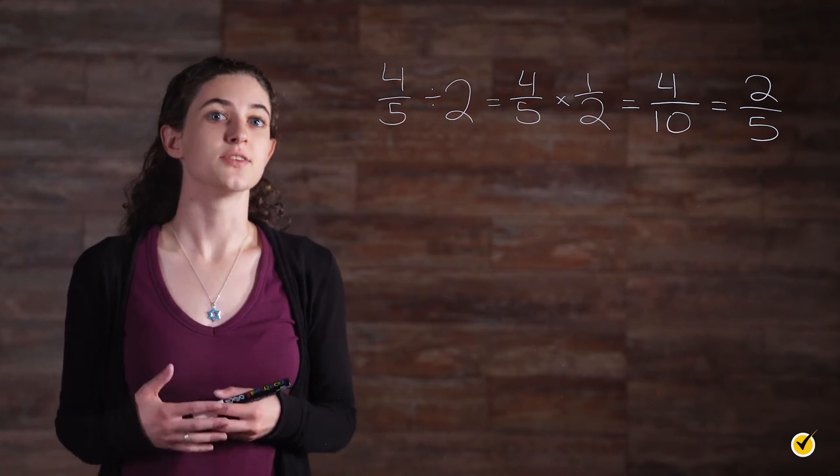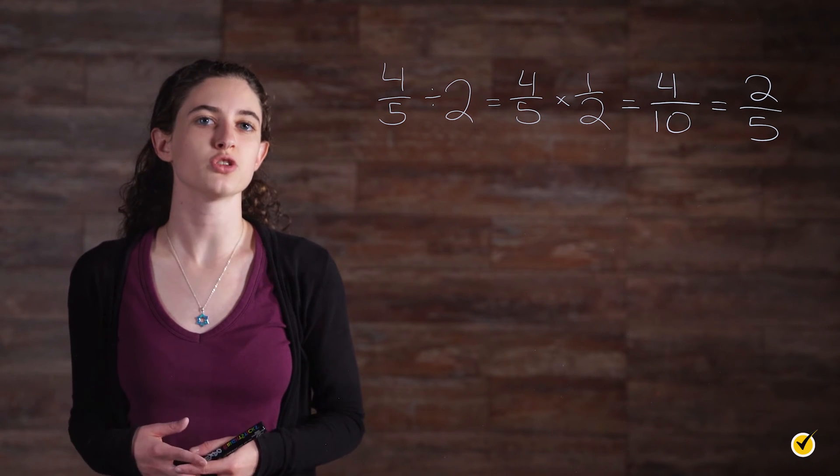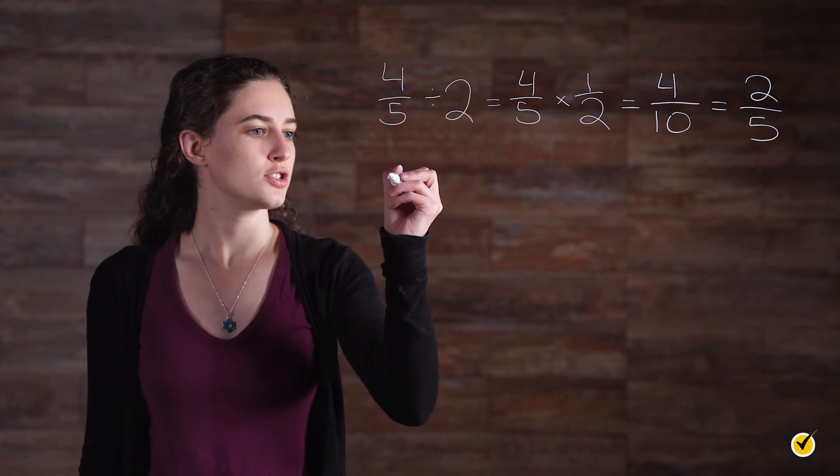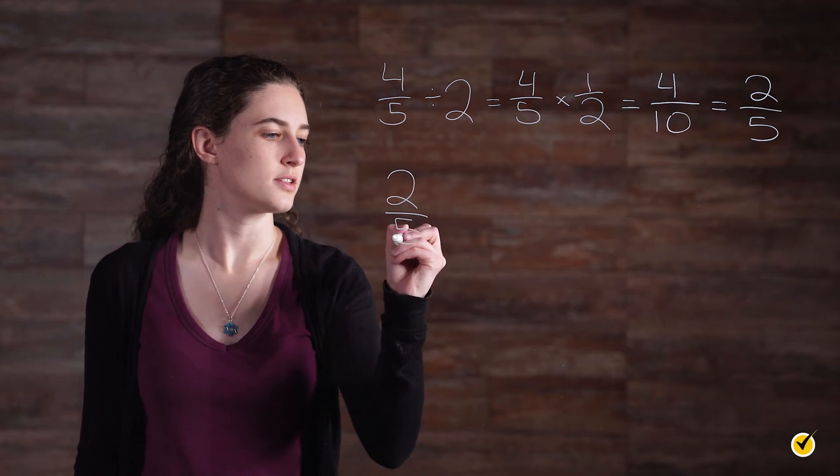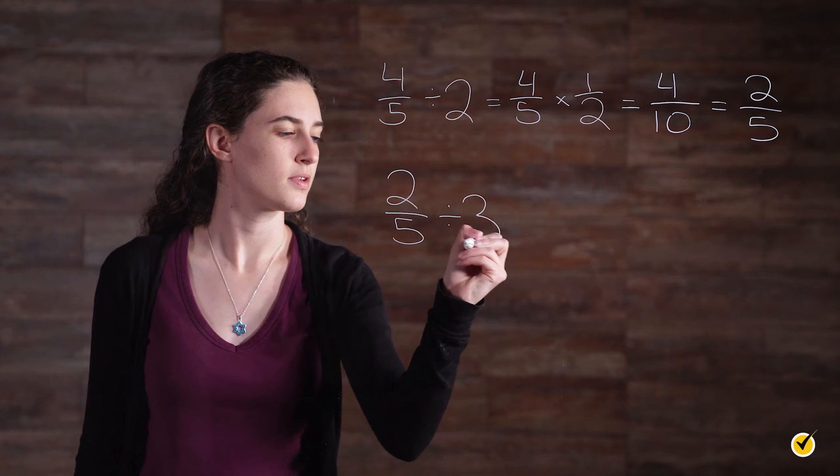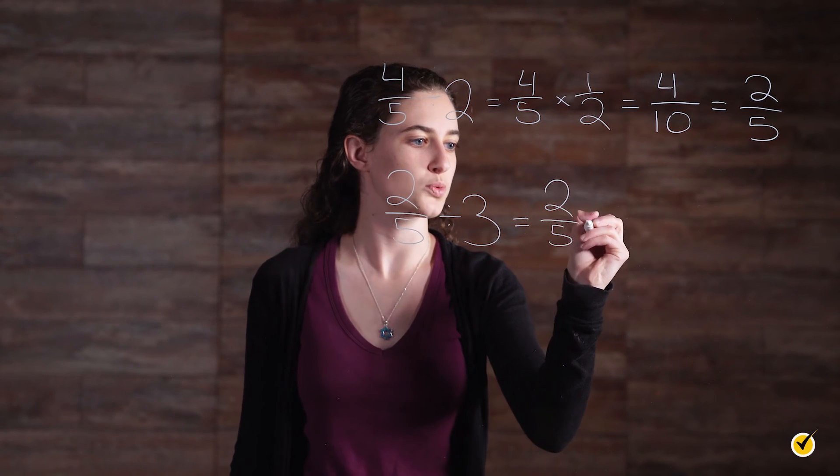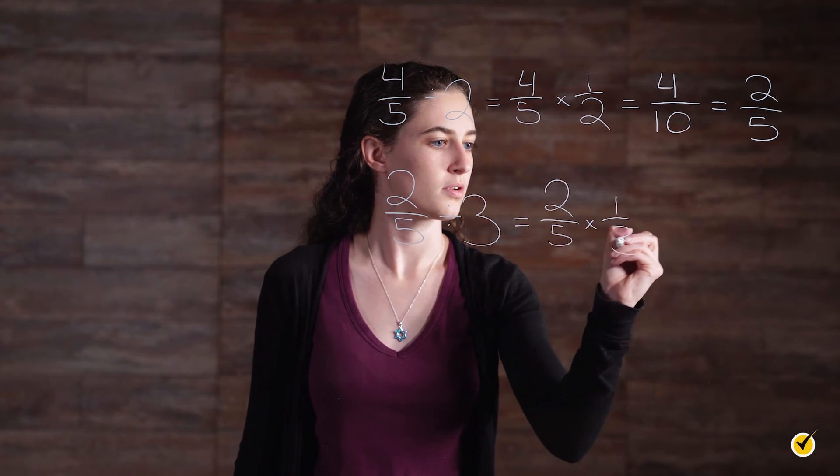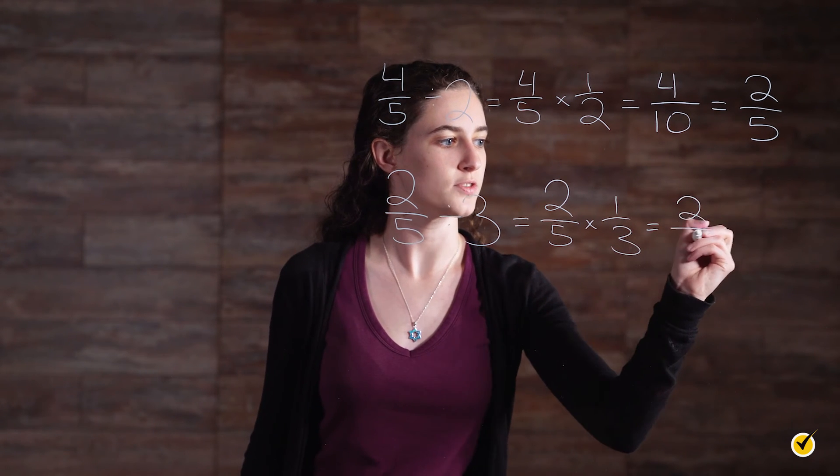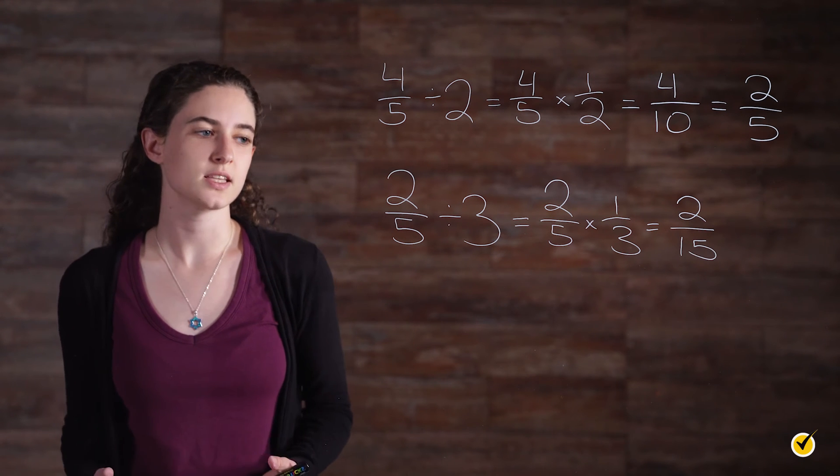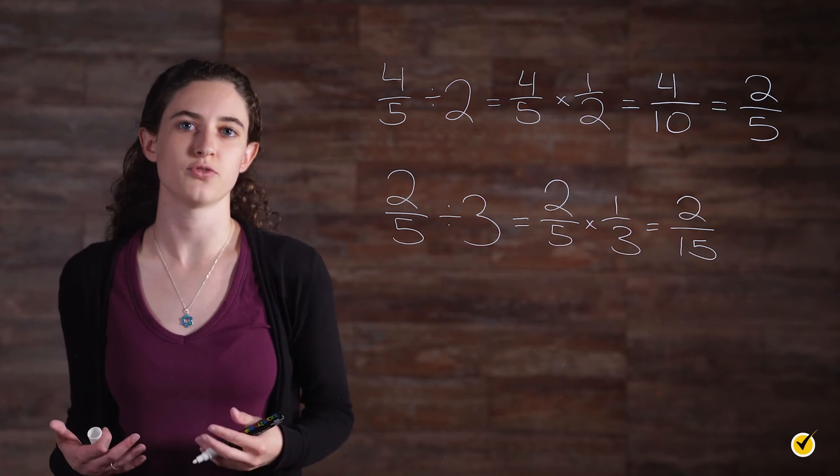Similarly, dividing a fraction by 3 would result in a fraction that is 1 third the size of the original. 2 fifths divided by 3 is the same as saying 2 fifths times 1 third, which gives you 2 fifteenths. So 2 fifteenths is 1 third the size of 2 fifths.